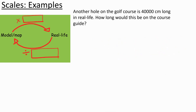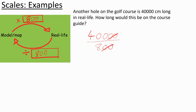Another hole in the golf course is 40,000 centimetres long in real life. We want to work out how long this is going to be in the course guide. The scale factor is still 800. To go from real life back to the model, we divide by 800. So 40,000 divided by 800: we can cancel zeros, giving us 8 into 40, which is 5, so we end up with 50 centimetres on the course guide.